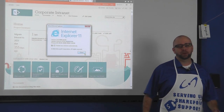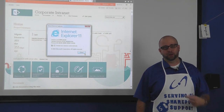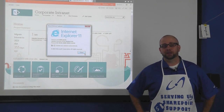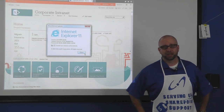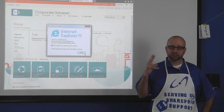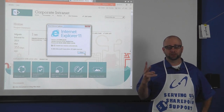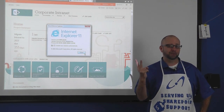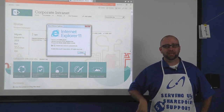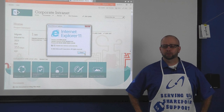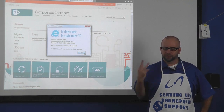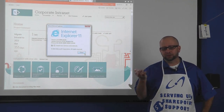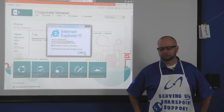Hi, I'm Joe with fpweb.net and you're watching Joe Knows Support. You're probably wondering how I got this job. Well, there were two prerequisites. One was be good at support. The other one was don't be named Bob or Matt. We have three Matts. Four Matts would cause a formatting issue.